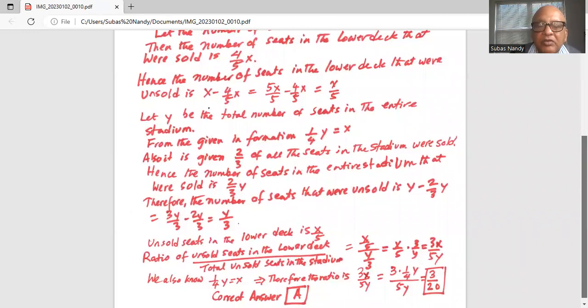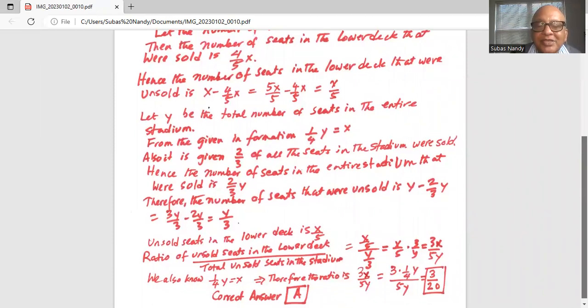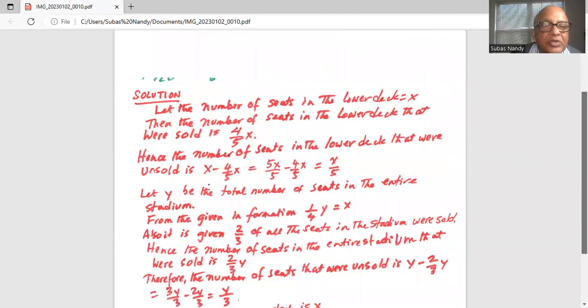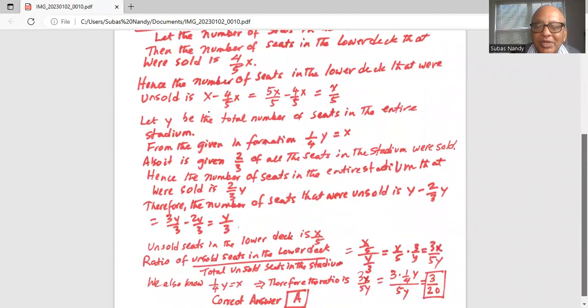That is the ratio of unsold seats in the lower deck divided by total unsold seats in the stadium. Y and y in the numerator and denominator cancel out. So it is 3 over 20. So the correct answer is option A which is 3 over 20.